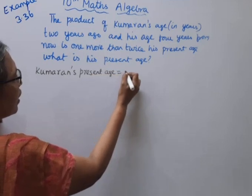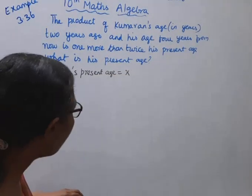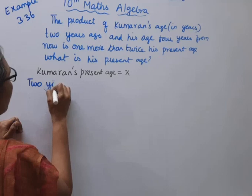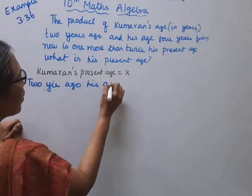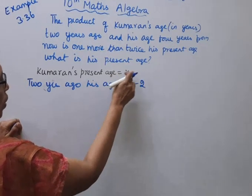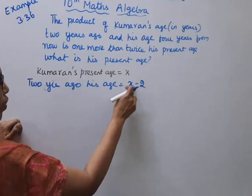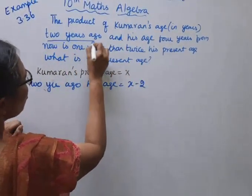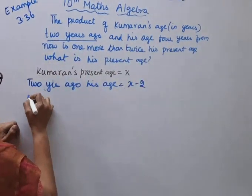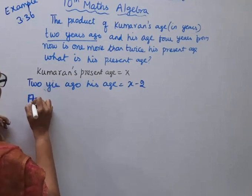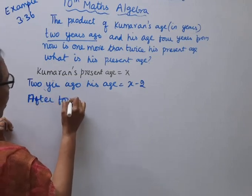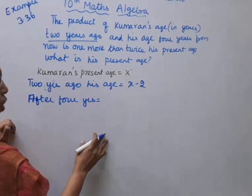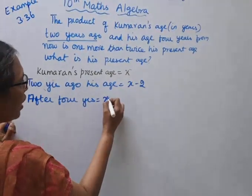Let Kumaran's present age be X. So 2 years ago, his age is x minus 2. For example, if present age is 15, then 2 years ago is 15 minus 2 equals 13. After 4 years from now, his age is x plus 4. If present age is 15, after 4 years it is 19.